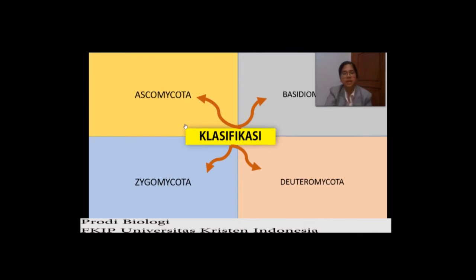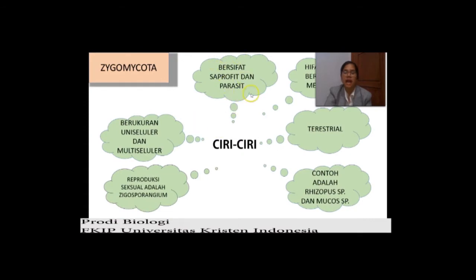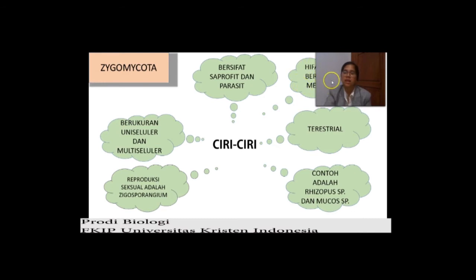Apa ciri-cirinya? Mari kita saksikan. Ciri-ciri yang pertama, dia ada yang bersifat saprofit dan ada yang parasit. Saprofit adalah yang hidup di makhluk hidup yang sudah mati atau sisa-sisa makhluk hidup. Parasit adalah yang hidup merugikan organisme lain. Kemudian, ciri selanjutnya, hifanya tidak bersekat — berarti aseptat — dan memiliki inti.